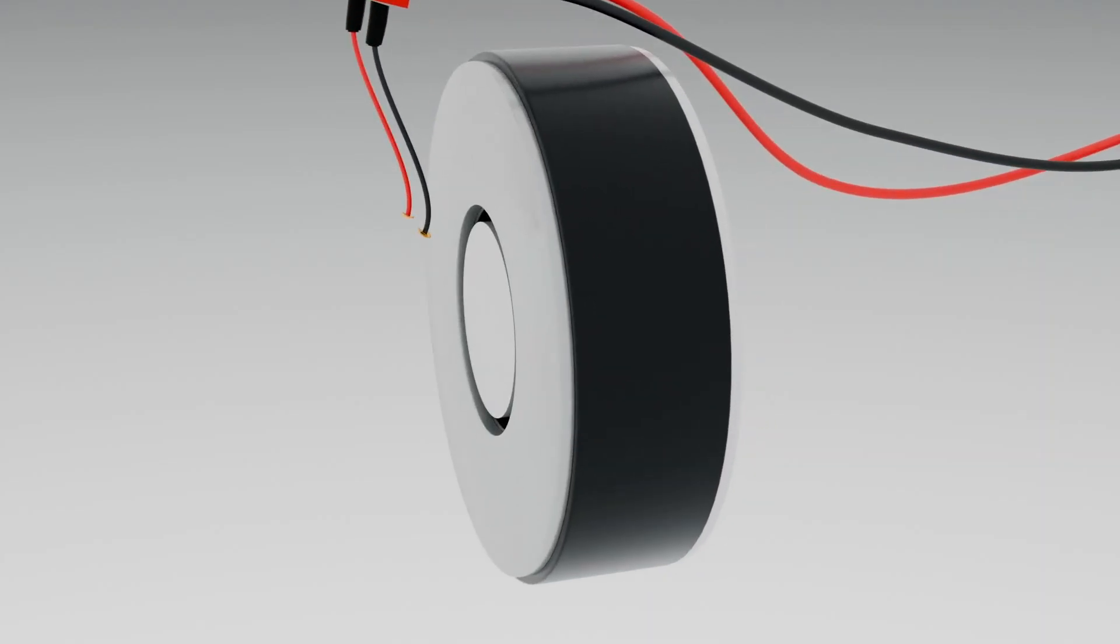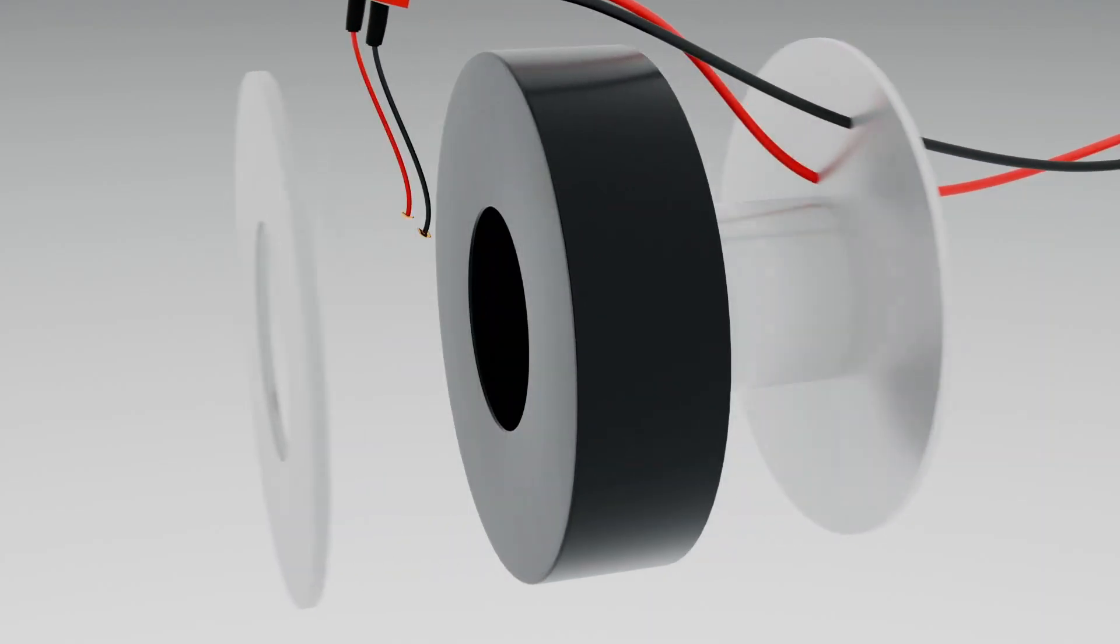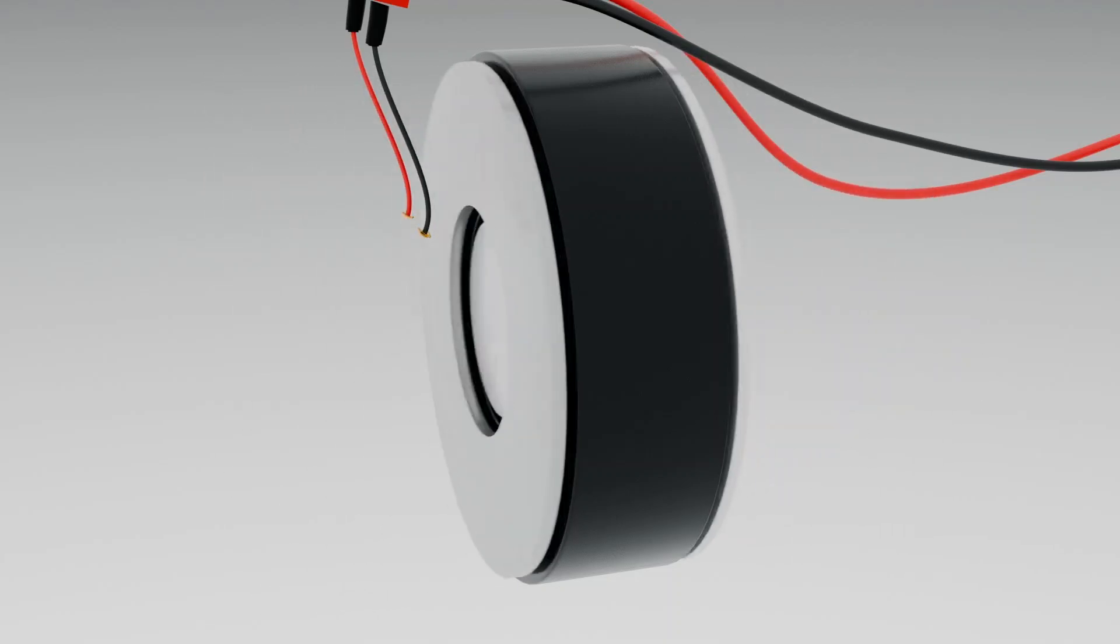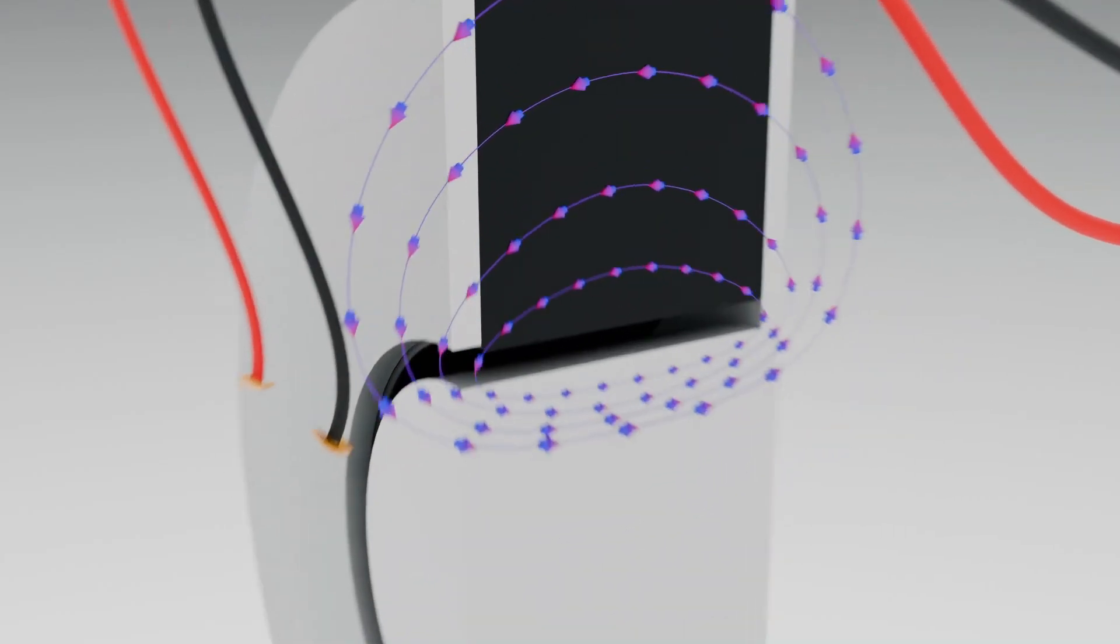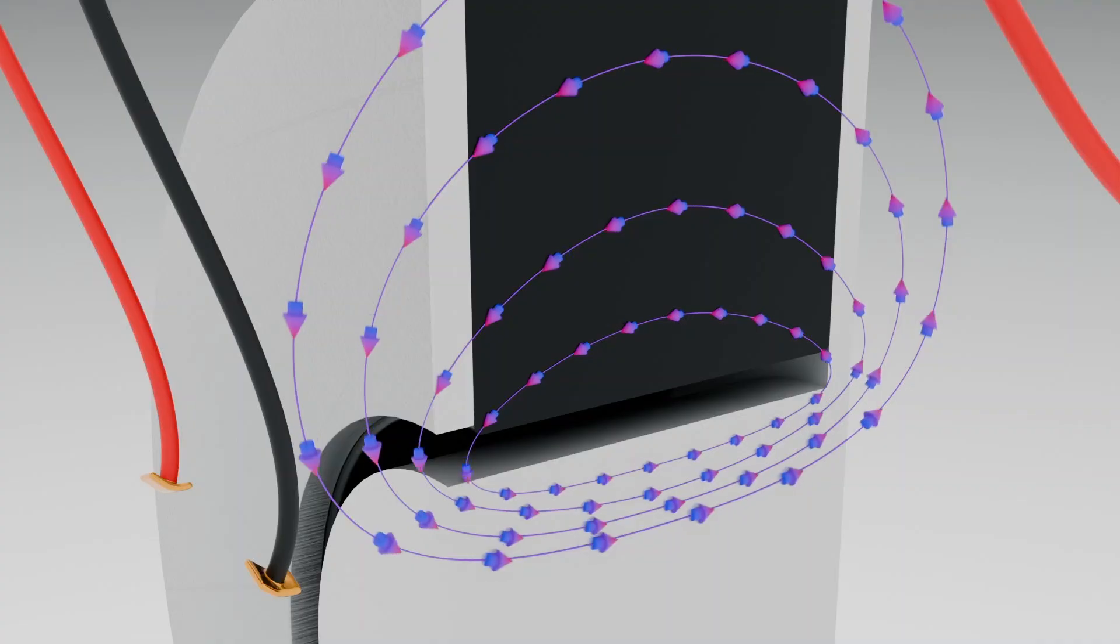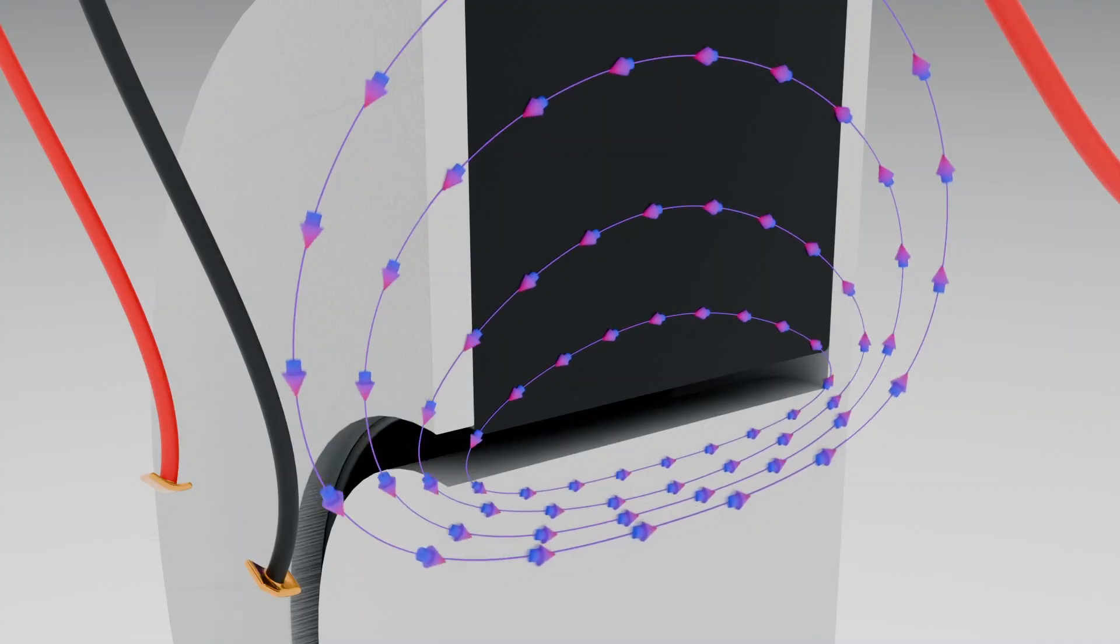This magnet is sandwiched between two metal plates. These metal plates act as flux concentrators meaning they help to concentrate the magnetic field of the permanent magnet which increases the speaker's efficiency.